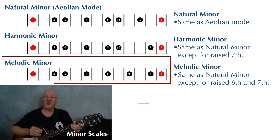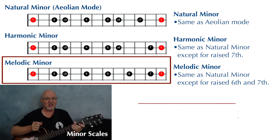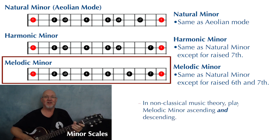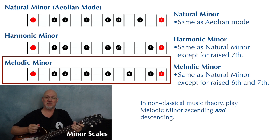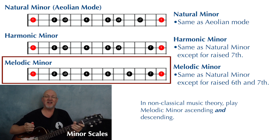Non-classical musicians, in particular jazz players, tend to play that melodic minor scale with the raised sixth and seventh both ascending and descending.